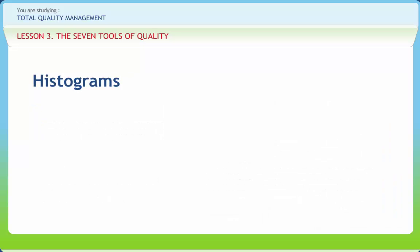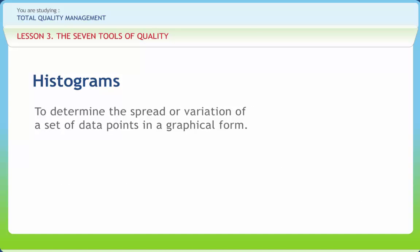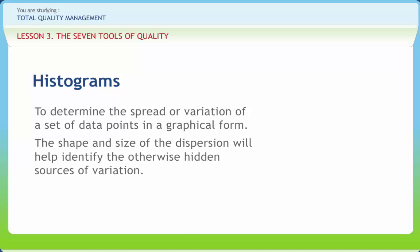The purpose of histograms is to determine the spread or variation of a set of data points in graphical form. How is it done? First collect data, 50 to 100 data points. Then determine range of data, calculate the size of class interval, divide data points into classes, determine the class boundary, count number of data points in each class, then draw the histogram.